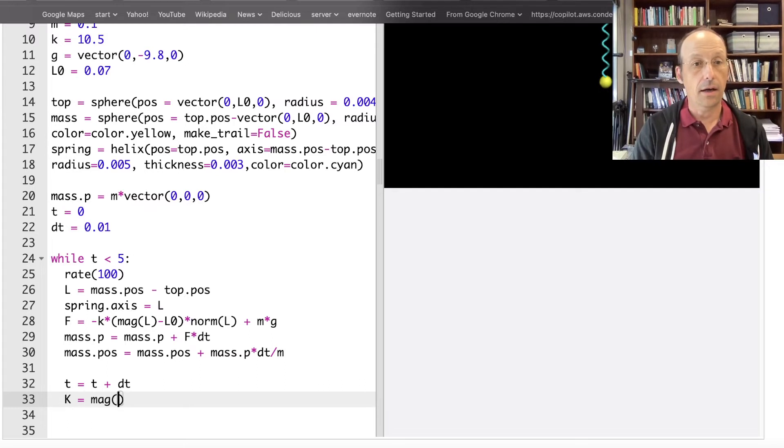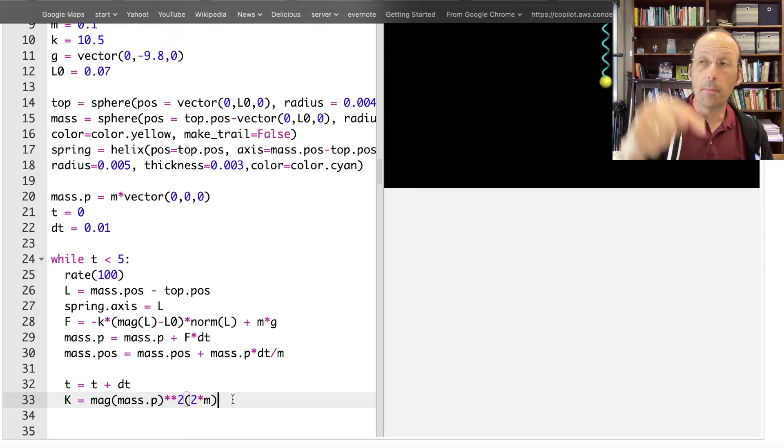So I'm going to take the magnitude of P. Mag, I'm going to call this mass dot P squared, divided by 2 times M. And I just called it M, right? Yep. So that's a kinetic energy. And the momentum is going to change, so the kinetic energy is going to change.